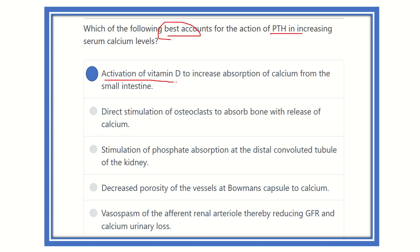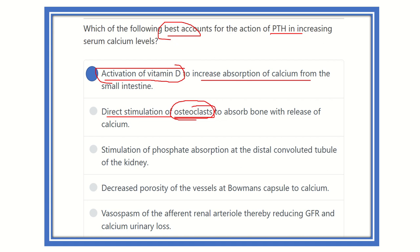So the best answer for the action of parathyroid hormone is the activation of vitamin D, which increases absorption of calcium. The option of direct stimulation of osteoclasts is not correct because PTH must first stimulate osteoblasts. Furthermore, even though osteoclasts are ultimately activated, this is not beneficial long-term as it weakens bone and risks pathological fracture.